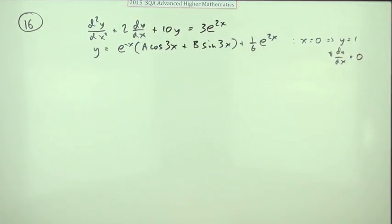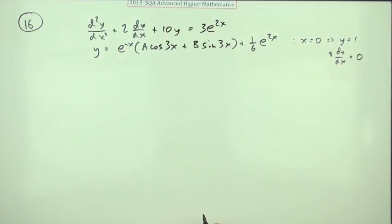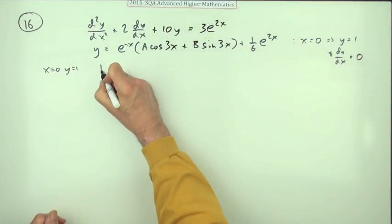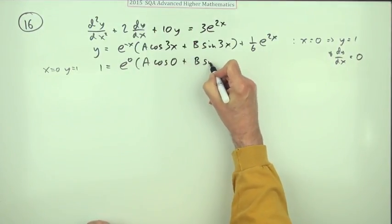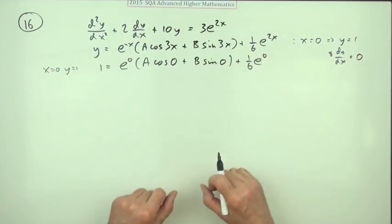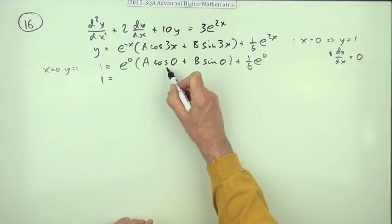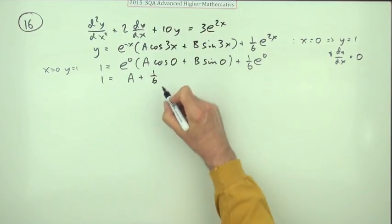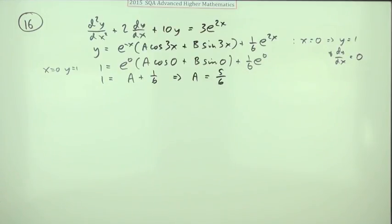Now there's three marks left and that'll be for finding the values of a and b given these initial conditions. So we can use the first of them straight away here. It says when x is zero, y is one. So one would equal, I'll just pop it all in: cos zero, sine zero plus 1/6 e to the zero. So one's going to be equal to, now the sine of zero is zero, the cosine of zero is one, so that whole thing just comes to a plus a sixth.